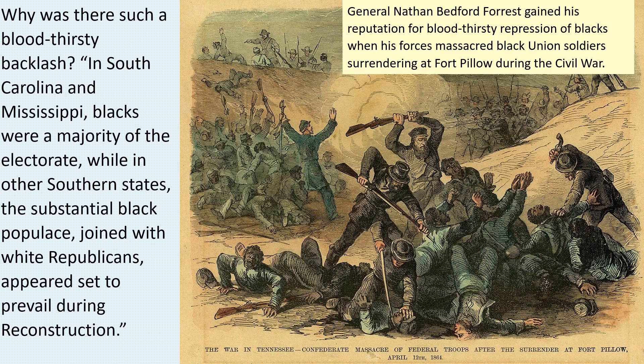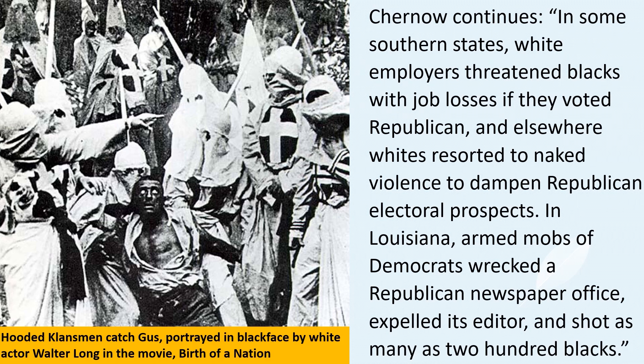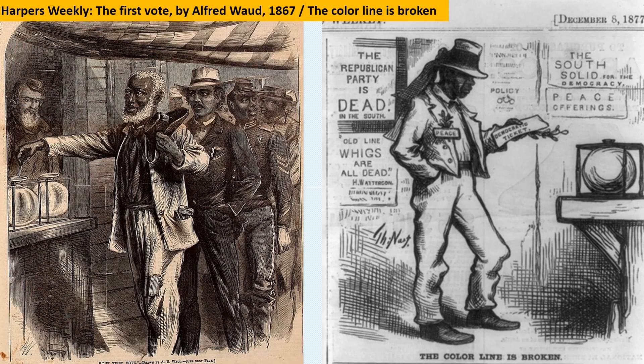Why was there a bloodthirsty backlash? In South Carolina and Mississippi, blacks were a majority of the electorate, while in other southern states, the substantial black populace joined with white Republicans appeared set to prevail during Reconstruction. Chernow continues: in some southern states, white employers threatened blacks with job losses if they voted Republican. Elsewhere, whites resorted to naked violence to dampen Republican electoral prospects. In Louisiana, armed mobs of Democrats wrecked a Republican newspaper office, expelled its editor, and shot as many as 200 blacks. Ballots at this time were not secret — Kentucky was the first state to adopt a secret ballot in 1891, and South Carolina was the last in 1950. Before then, many states had oral polls, which meant anyone could eavesdrop on the voting.